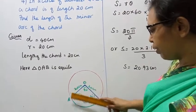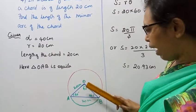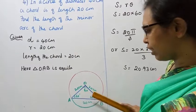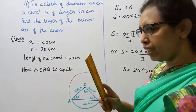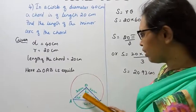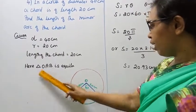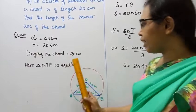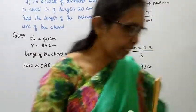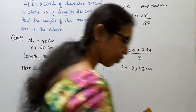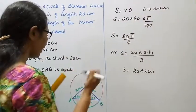20, 20, 20 is equal at the triangle. Angle is 60, 60, 60. Sum of the angle is 180 degree. Angle is 60 degree. Here, triangle OAB is an equilateral triangle.